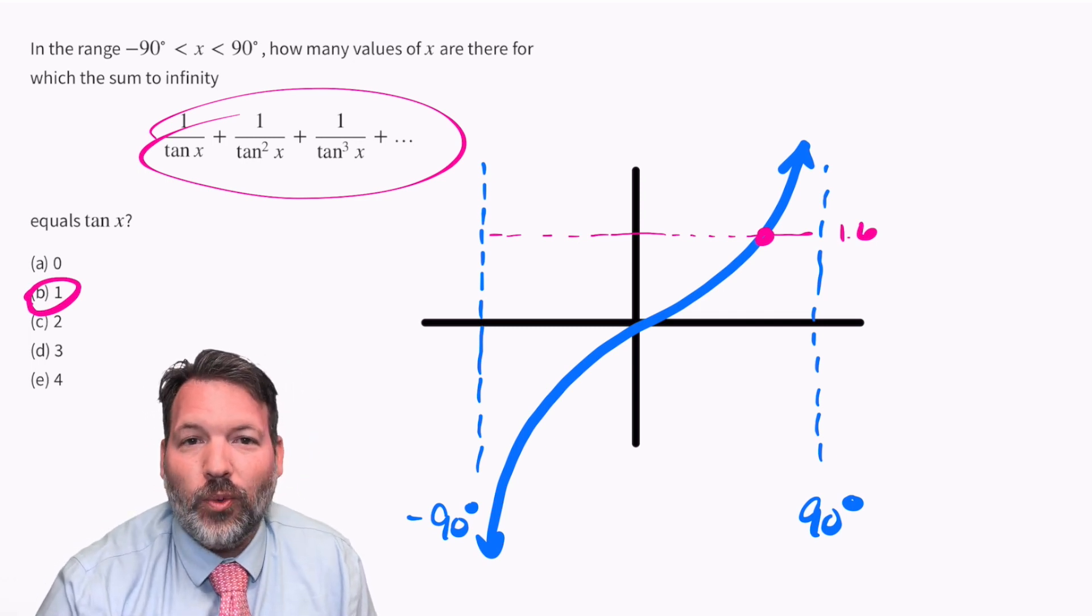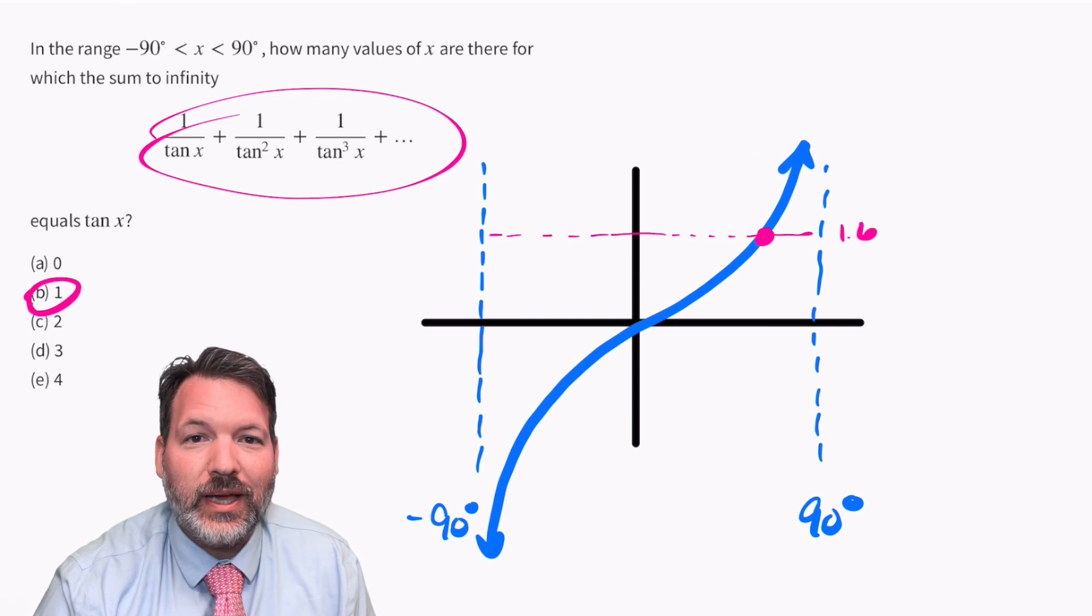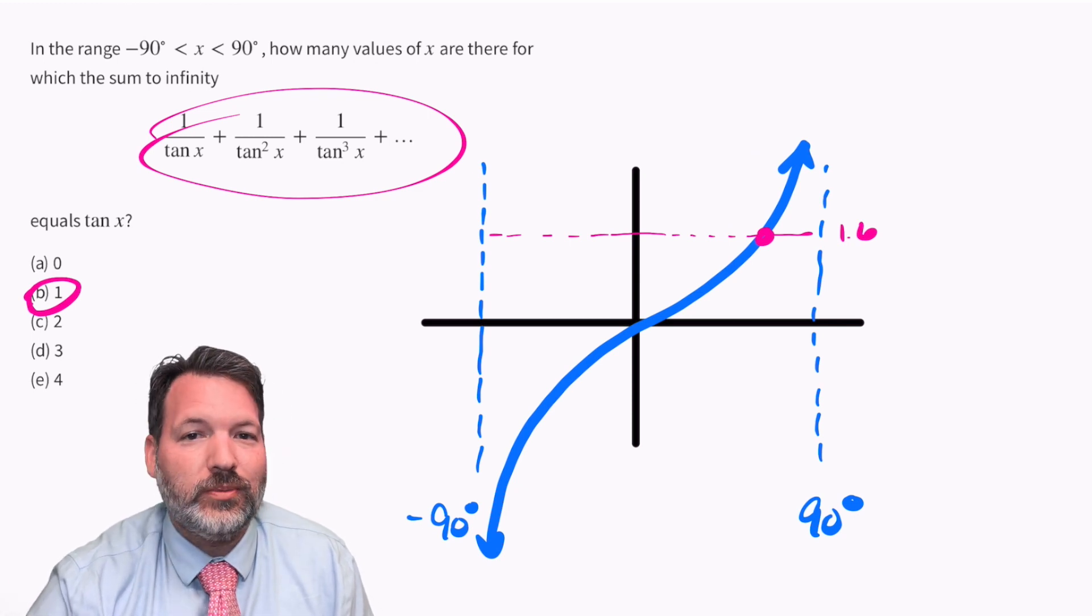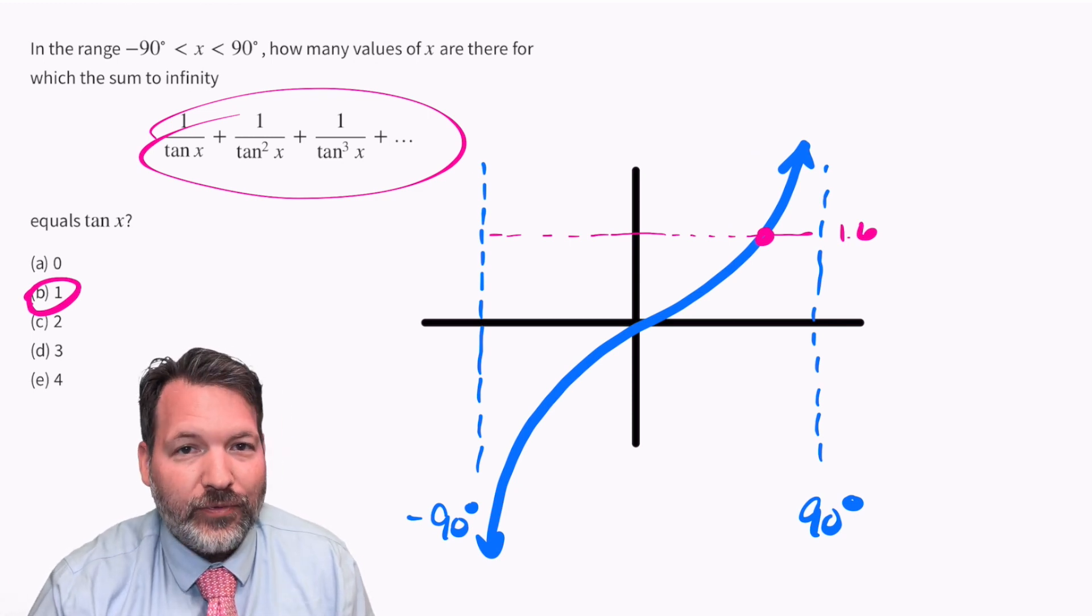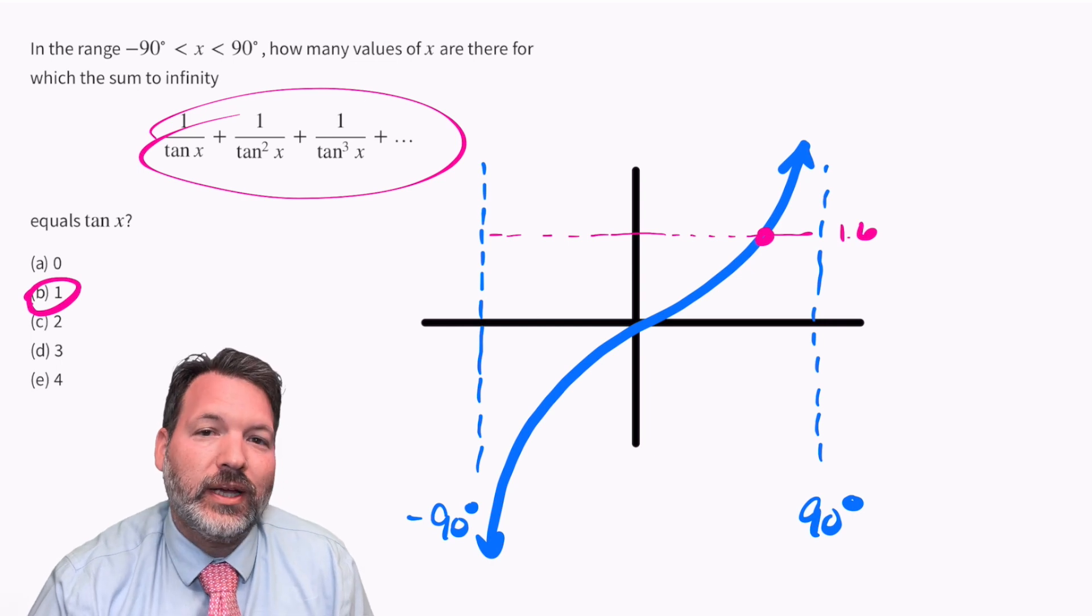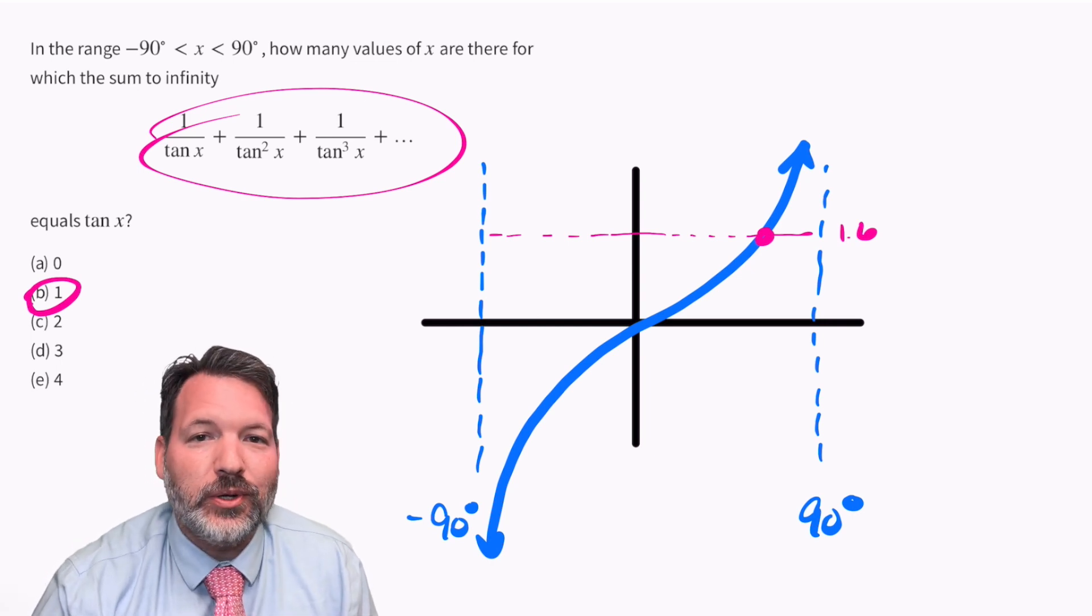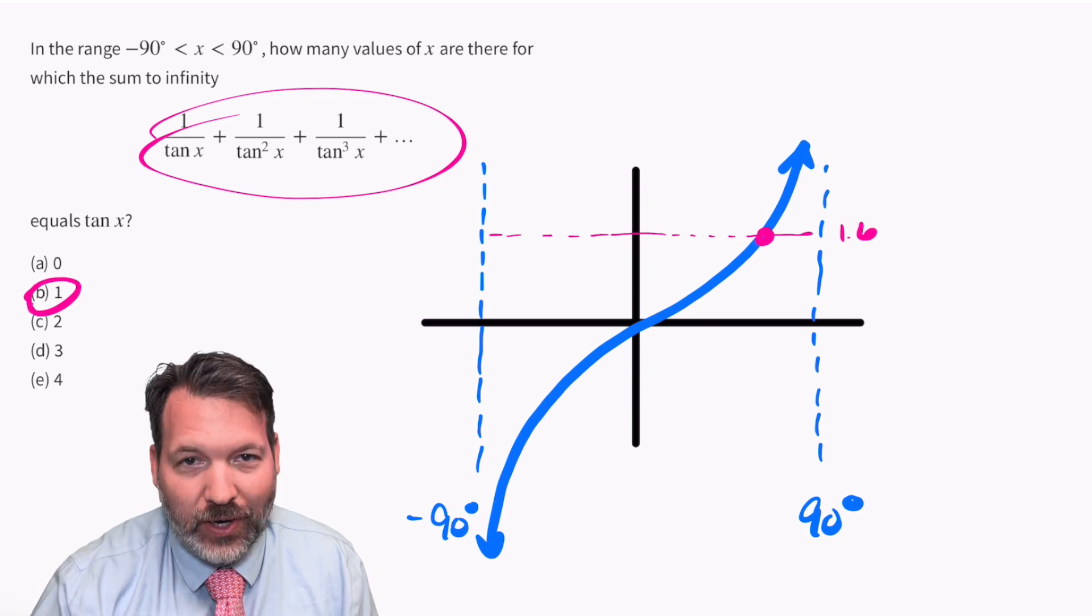The infinite series 1 over tan x plus 1 over tan squared x plus 1 over tan cubed x, and so on and so on forever, will be equal to tangent x itself one time between those asymptotes of negative 90 and positive 90.